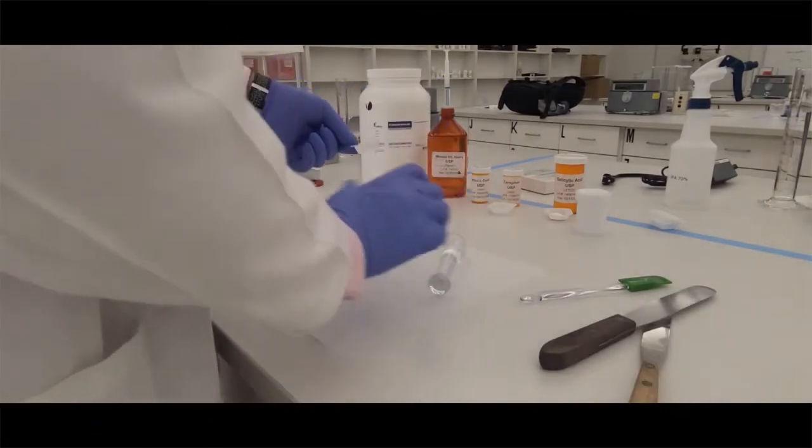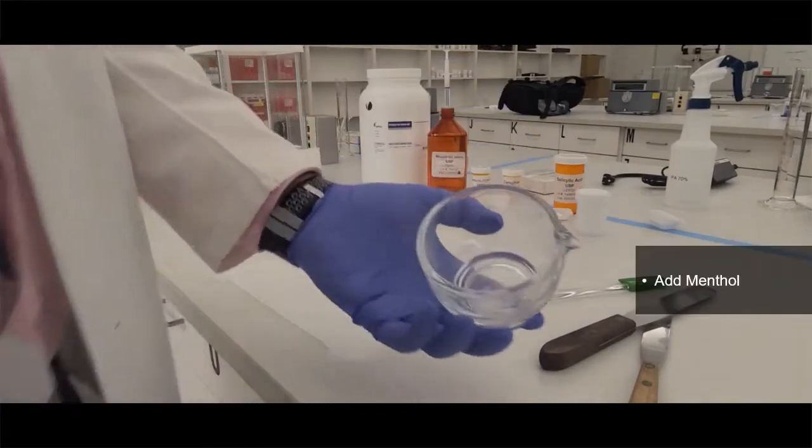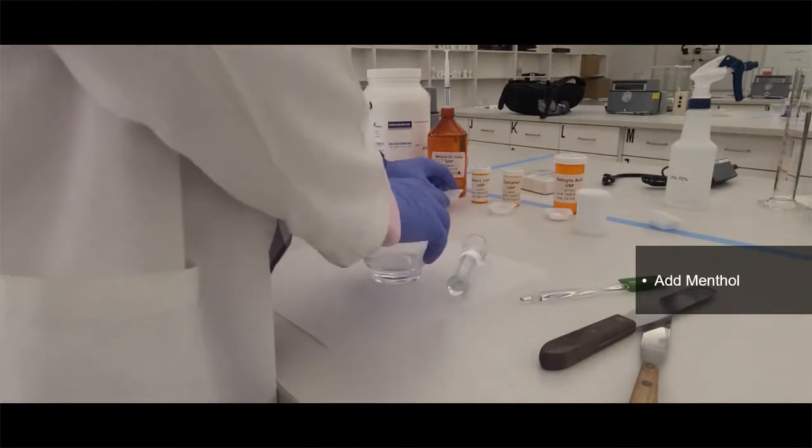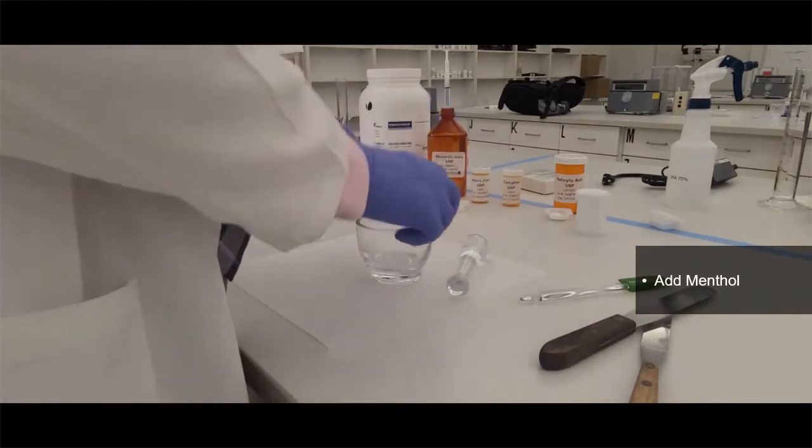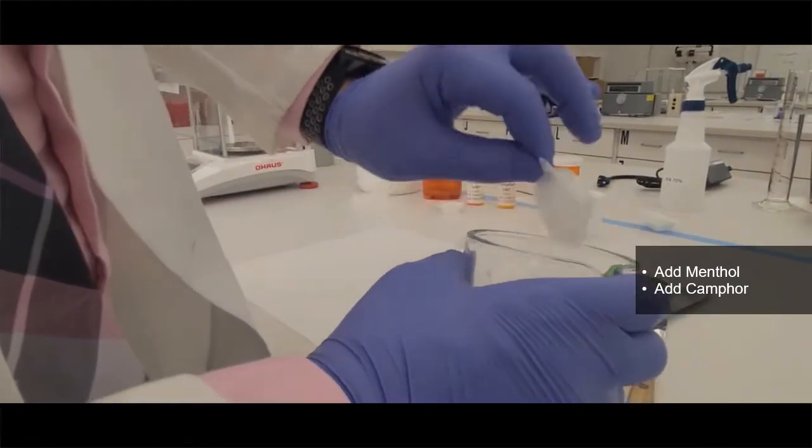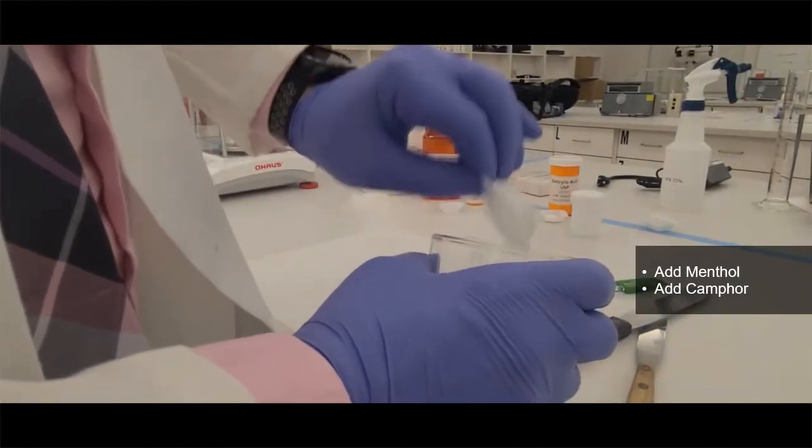And then with our clean glass mortar and pestle, we're going to first put in the camphor and menthol. So first I have in here menthol. You'll notice it's a very crystalline material. And then next I'm going to add in the camphor. The camphor is almost like a waxy sort of material. So these are very hard to crush down and make into fine powders.